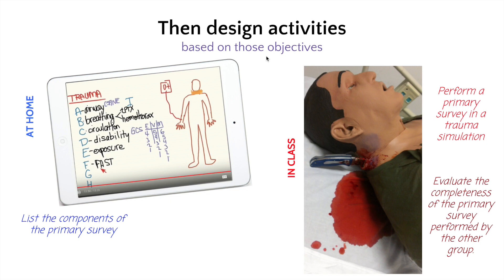You design your activities based on these objectives. For 'list the components of the primary survey,' I'd have a video going through each component in detail so students understand and can list them. Then the in-class activity is the simulation — perform a primary survey. I have a simulation case, like someone who got stabbed in the neck, and they need to perform a primary survey. Then to evaluate completeness, one group performs while another watches on a TV in another room, going through a checklist: that group forgot to do airway, they did do breathing, circulation is an issue they haven't addressed. That's evaluating, which is a higher-order objective.